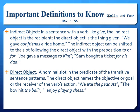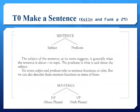A sentence may have a direct object if the verb is transitive, and an indirect object if there is a receiver of the action. Every sentence will consist of a subject and predicate. The terms subject and predicate are terms for the function of the forms, such as noun phrases and verb phrases.